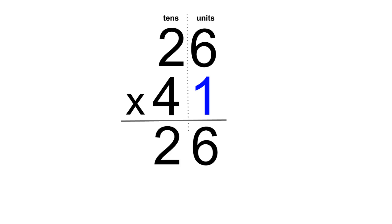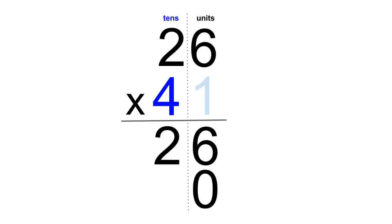We have now multiplied the units digit of the bottom number with each of the digits in the top number. You can now strike out this digit as we've finished multiplying with it. Now let's move on to the next digit of the bottom number, which is in the tens column. Because a tens number always has a units digit sitting next to it, you'll need to start by adding a 0 in the units column. We will multiply the 4 by the top number 26, starting with the units digit — so 4 times 6, followed by 4 times 2.